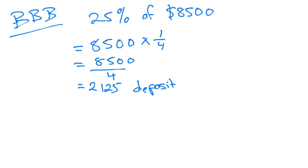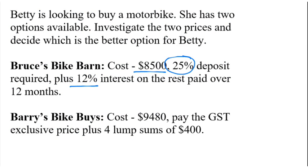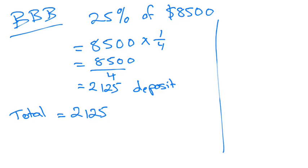So then when we look at how much she has to pay in total, she's going to pay that deposit of $2,125 and the rest of it she's paying 12% interest. So the rest of it we need to find out how much is the rest. So that's going to be $8,500 take away $2,125 which is $6,375.